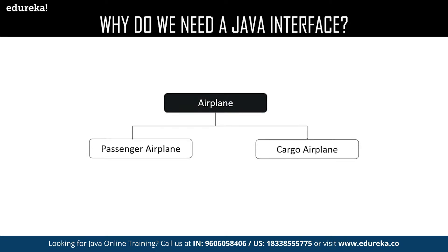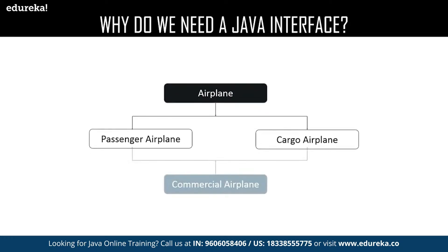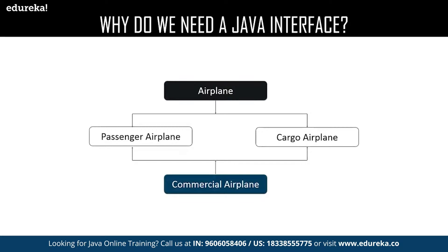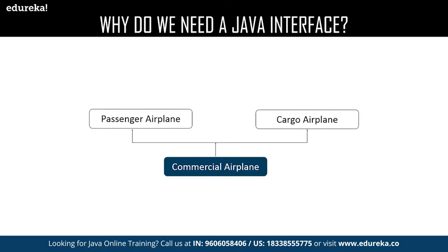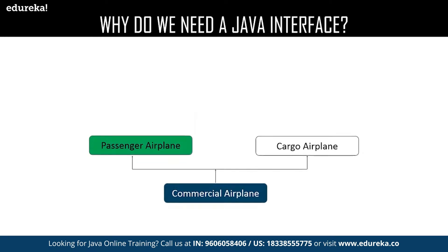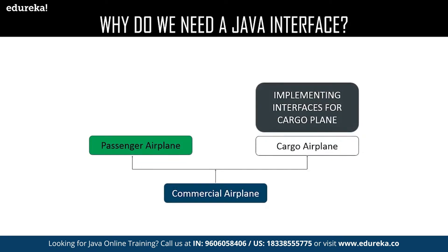Let me explain with an example. Consider an airplane which requires both the properties of carrying huge cargo and passengers. Let us assume we have two planes — one capable only of carrying passengers and another only capable of carrying cargo. We need to carry both in one plane. You can make it possible by making Java inherit one plane and implement the methods of the other, like building a commercial plane that does both tasks.